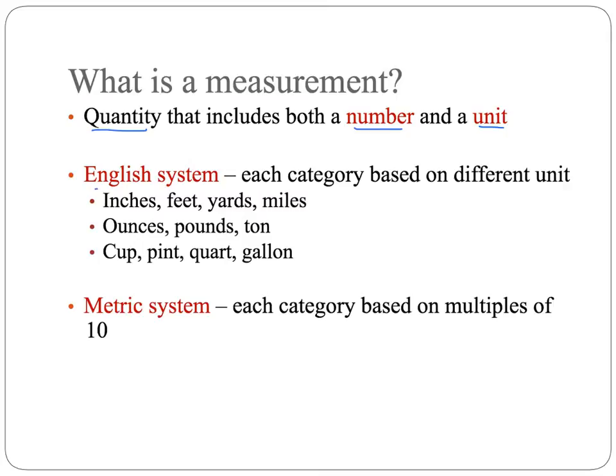The English system is what we use every day. Things like inches or miles or pounds or gallons, and this is a difficult one to work with because each category is based on a different unit and a different relationship between the units. So you know that with inches you've got 12 inches in a foot, but you only have three feet in a yard. So going from inches to feet you're thinking about 12, and going from feet to yards you're thinking about three.